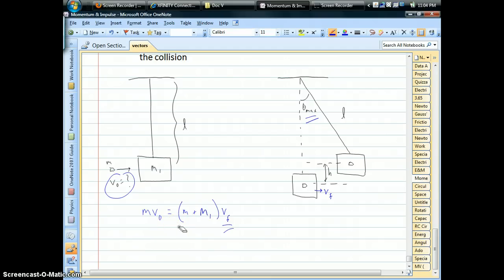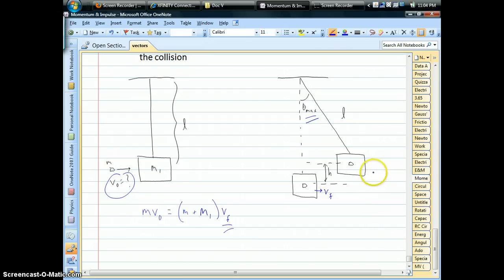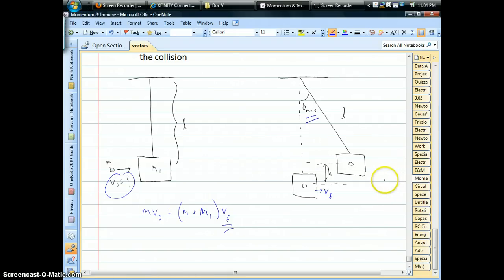Alright, so here goes. How do we do this? Well, if we know the height, once the collision's over and the bullet's stuck inside there, the pendulum is just swinging. It's normal. So energy is conserved after the collision. Whatever that kinetic energy was, right after the collision happens, turns into potential energy when you're at your highest point of the swing.